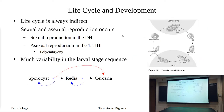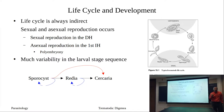Life cycle — always indirect, always multi-host. The digenea got its name because we have sexual reproduction and asexual reproduction. For our digeneans, sexual reproduction occurs in the definitive host — that's part of the definition of a definitive host. Our asexual reproduction occurs in the first intermediate host, in that mollusk.